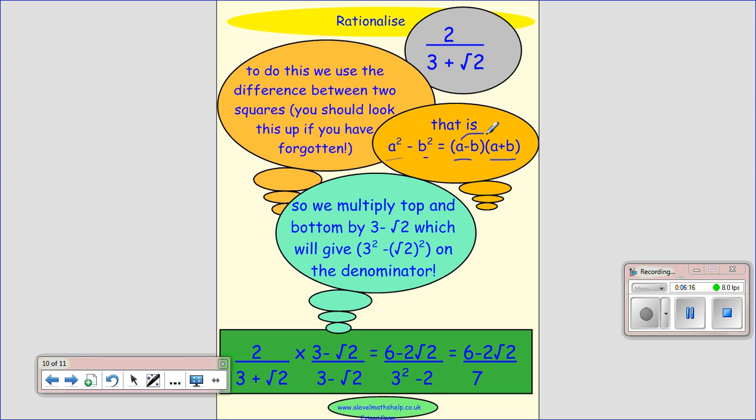So if we look at this, we get a times a is a squared. a times plus b is ab. Minus b times a is minus ab, so the ab term disappears. And minus b times b would give you minus b squared. So a squared minus b squared can be factorized into a minus b times a plus b.